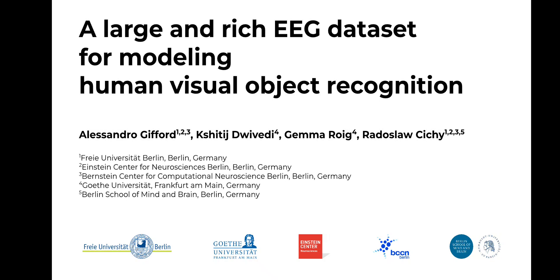Since the deep learning revolution of the last decade, we've seen a surge of collaborations between vision neuroscience and computer vision. While these collaborations have proven really fruitful and already changed the way in which we research visual intelligence, this multidisciplinary symbiosis is still at its infancy. We contribute to accelerating this interaction with a new data resource that we hope will further bridge neuroscience and computer science, specifically for the function of visual object recognition.